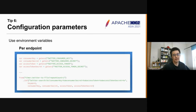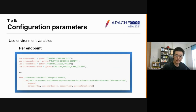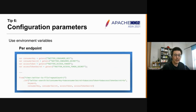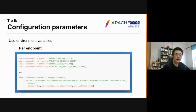Tip six: configuration parameters. One of the most complicated parts of integration is the connection information and credentials required to connect to remote systems and services. My recommendation is to read those parameters from environment variables at the beginning of the script.